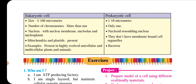In the prokaryotic cell, the true nucleus is absent — it is reassembled. In the eukaryotic cell, membrane-bound organelles are present. In the prokaryotic cell, they are absent. The cell wall in prokaryotic cells is present.